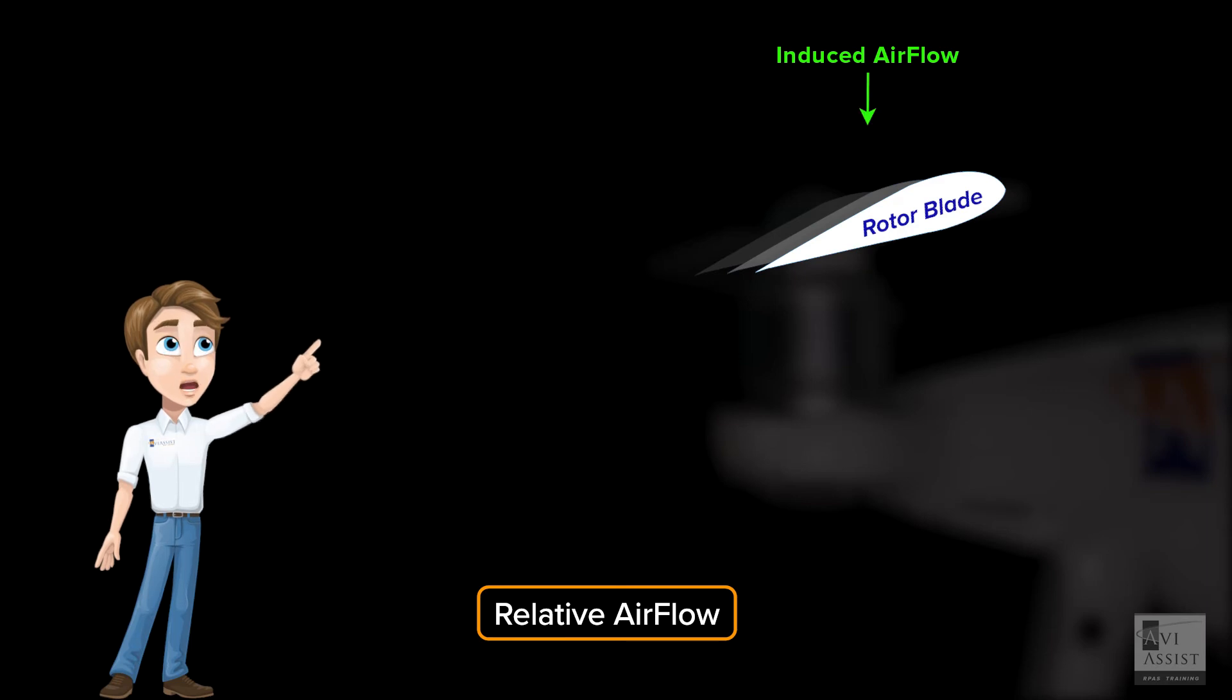Another component of relative airflow is induced airflow. The induced airflow comes vertically down through the rotor and is caused by the rotor pushing airflow downwards. So then, the airflow from above the rotor is drawn down to replace that air.